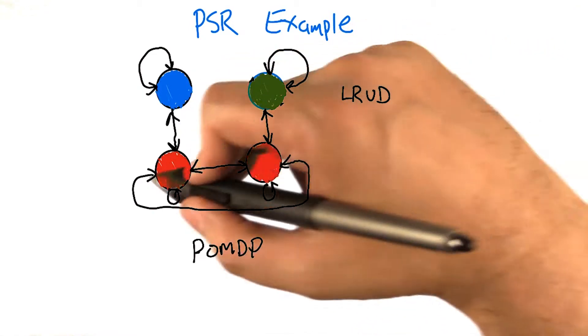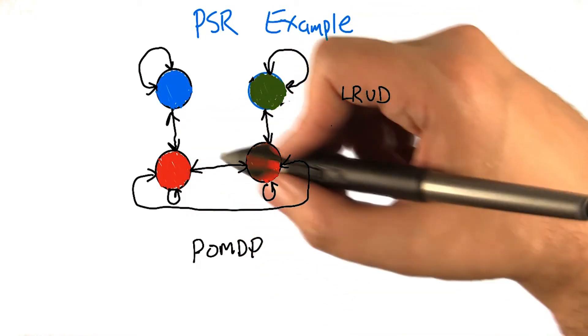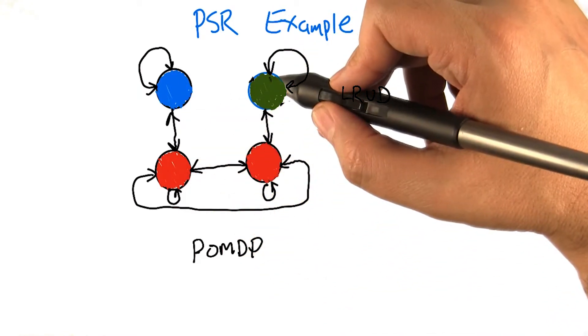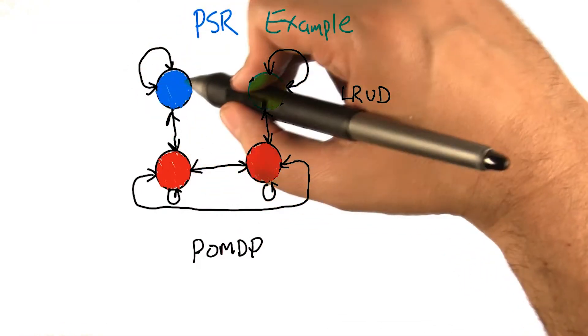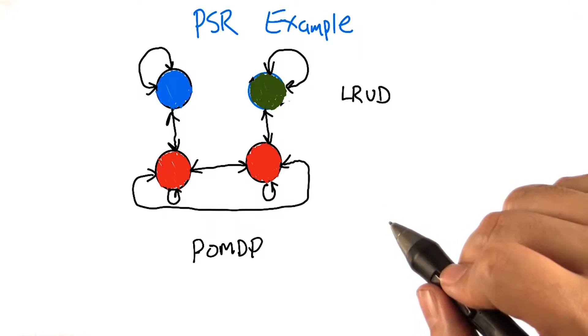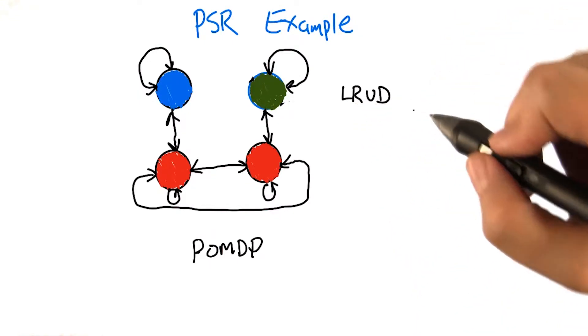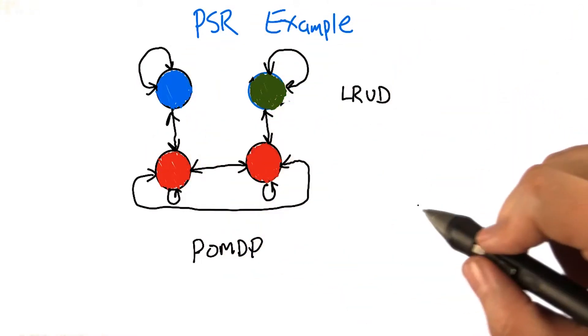So these two states are indistinguishable by their immediate observations. And let's say there's four actions: north, south, east, west. So north from this red takes you to this green. North from this red takes you to this blue. East and west from this blue leave you where you were, et cetera. Does that make some sense? Yes. So we've got left, right, up, down as our actions.